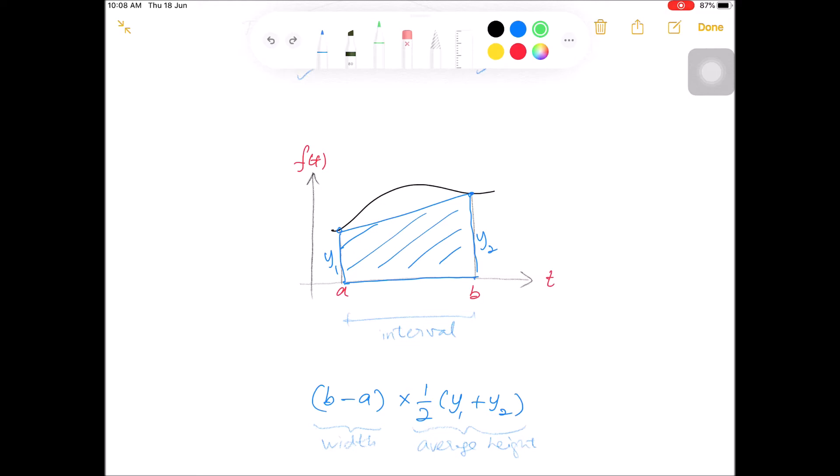So to improve the approximation of the area below the graph in the interval, we should increase the number of trapezium to, let's say, 2, 4, or even more. As can be seen here, this area, which is known as the truncation area, can be reduced significantly by using more number of trapeziums.